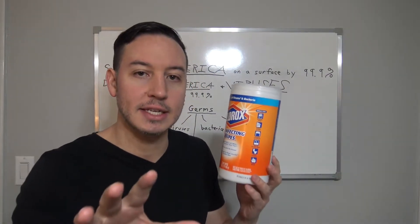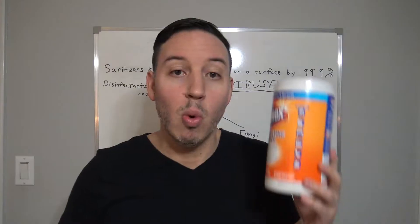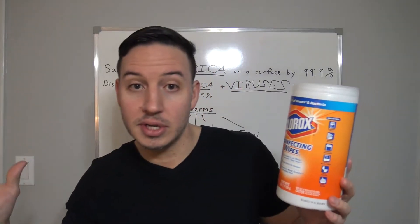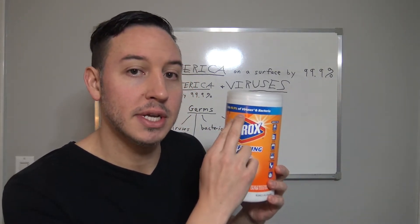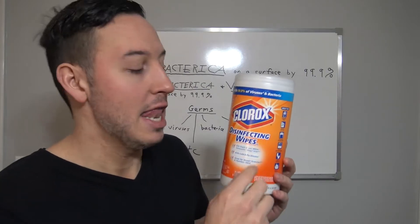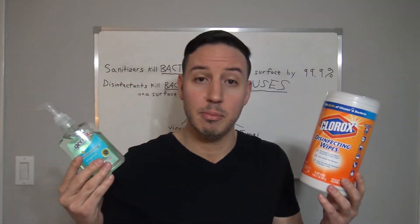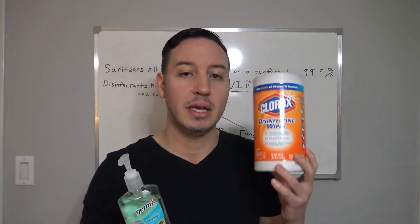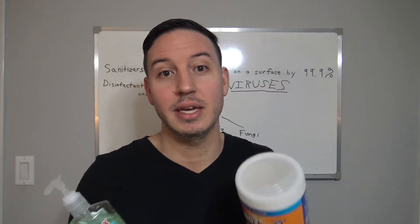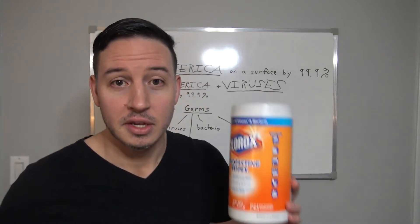Important note: whenever you're choosing a disinfectant, read the label to see what the product actually kills. One disinfectant might be made to kill germs A and B while another kills germs G and H. When a product says it kills 99.9% of bacteria and viruses, it means the specific bacteria and viruses listed on that product. Also, sanitizers and disinfectants are regulated by the EPA — they go through rigorous testing, so if they claim to disinfect or sanitize, you can be confident they'll work. It's illegal to make those claims if they don't.